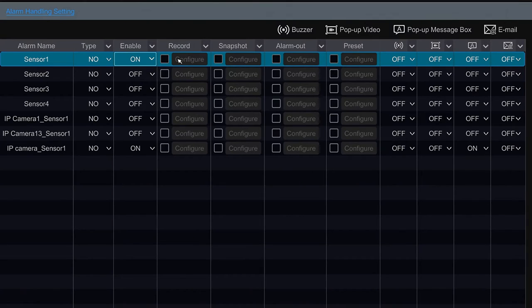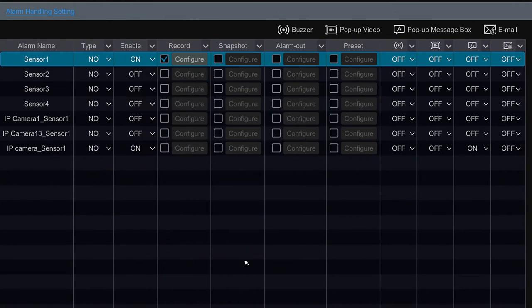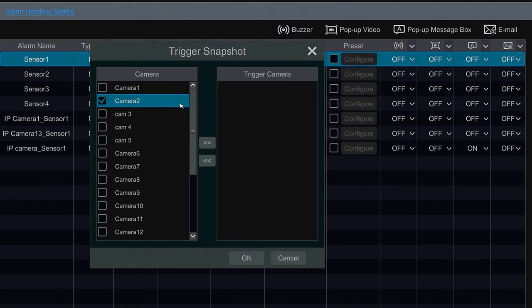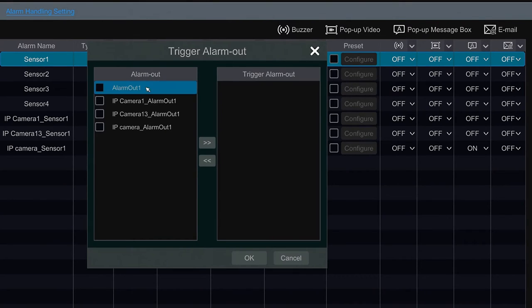And here we can choose the actions once the sensor is triggered. So I will tell the DVR to record camera number one. Also I want to take a snapshot of camera number two. Then if I have a house alarm I can connect the alarm into my DVR. If the sensor gets triggered my house alarm will also get activated. In this case I don't have one, but if I had one I will select alarm out.